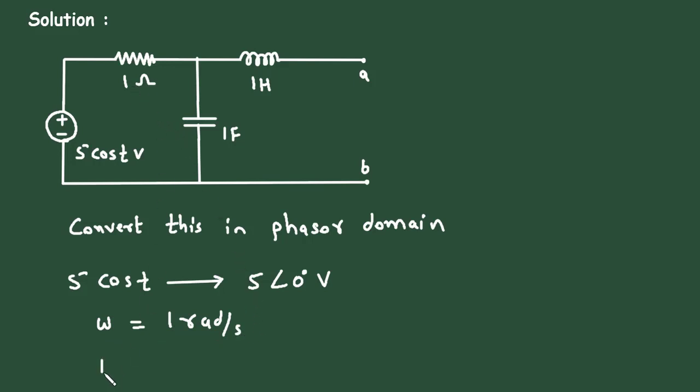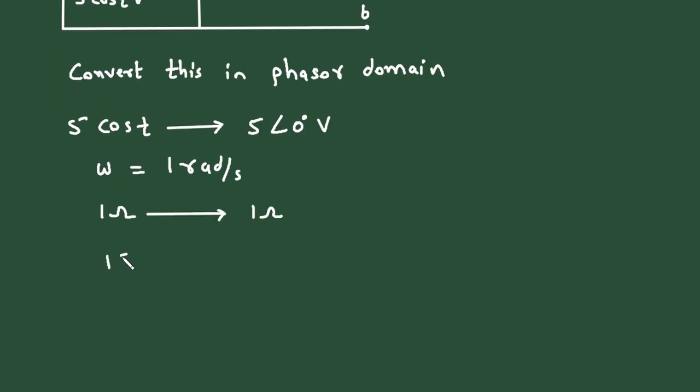Now this 1 ohm will remain same. This 1 farad will change to 1 upon j omega c. So 1 upon j into omega value is 1 into capacitance value is 1. So 1 upon j is minus j, minus j ohm.